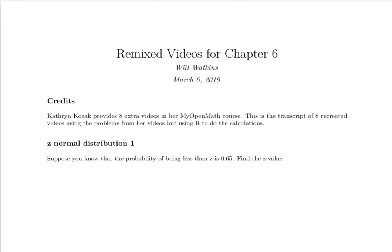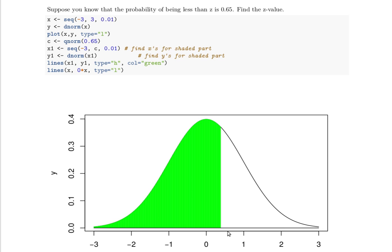Let's draw a graph. So we're looking for a Z value that's on this right hand end of this green region. That green region contains 65% of the area under the curve.